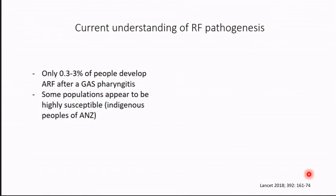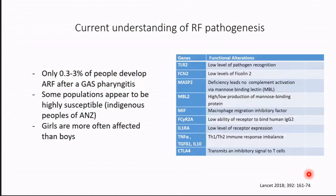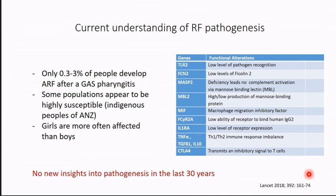We know that in some pockets of high incidence — in the Northern Territory of Australia or among the Maoris in New Zealand — there is a tremendously high incidence and prevalence of disease which cannot be entirely explained by low socioeconomic status alone. So there may be a genetic predisposition; girls are more affected than boys. There are potential genetic determinants, but these are all of very small magnitude. No new insights into the pathogenesis of ARF have been gathered in the last 30 years, although some GWAS studies initiated by Bungani in Africa may add knowledge, but essentially it's not going to be game-changing.